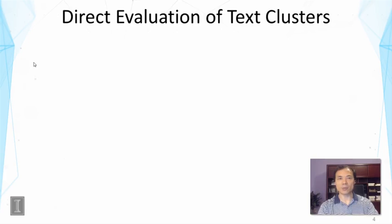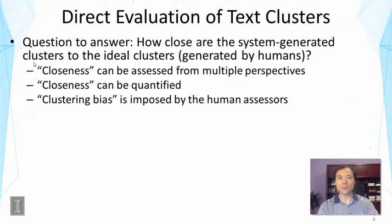In general, we can evaluate text clusters in two ways: direct evaluation and indirect evaluation. In direct evaluation, we want to answer the following question: how close are the system-generated clusters to the ideal clusters generated by humans? This closeness can be assessed from multiple perspectives, which helps us characterize the quality of clustering results from multiple angles — and this is sometimes desirable.